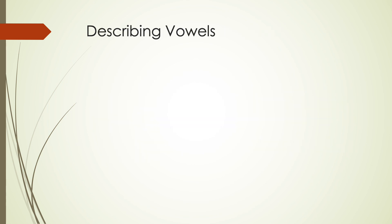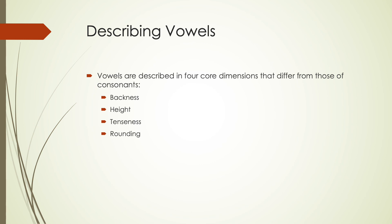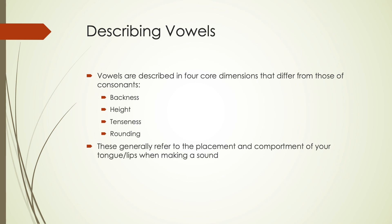When describing vowels, rather than using voicing, place, and manner, we instead talk about where in the mouth they're taking place. We use backness (how far back or forward in the mouth), height (how far up or low in the mouth), tenseness (how tense you're making your jaw — not a distinction that has always existed in English), and rounding (whether or not your lips are rounded or flat). These are general descriptions that give you an area of the mouth rather than a specific pinpointed location.